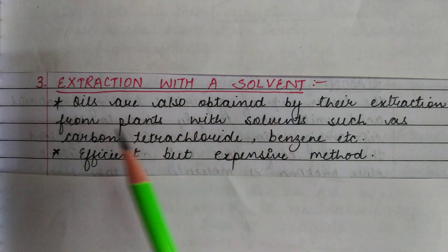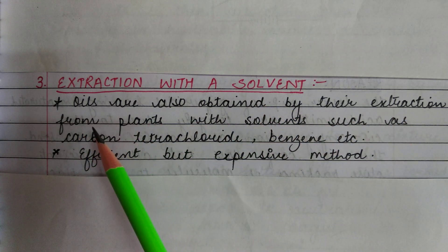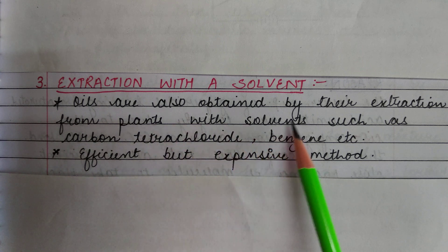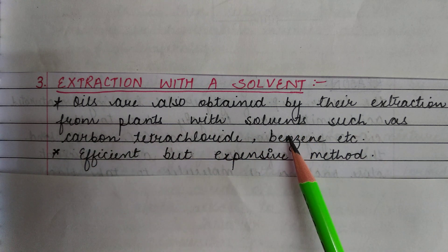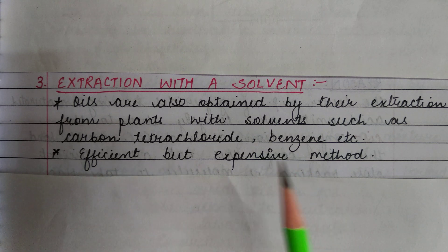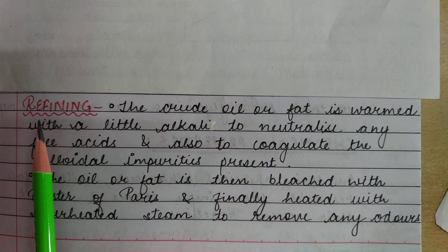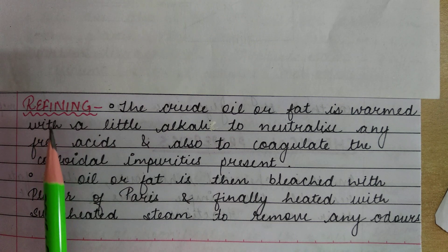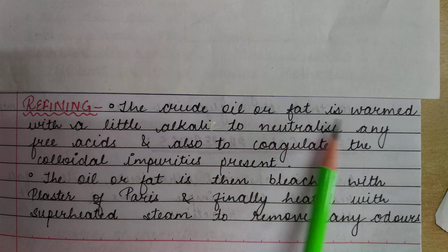The third method is extraction with a solvent. Oils are also obtained by extracting them from plants using solvents such as carbon tetrachloride and benzene. This is an efficient method, but it is expensive.